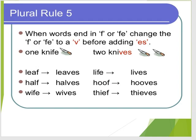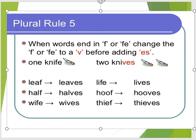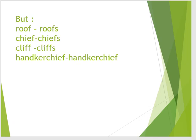If a noun ends with F or FE, in plural we change F into V and then we must add ES. For example: leaf becomes leaves, half becomes halves, wife becomes wives. All these examples end in F and we must change F into V, then add ES.